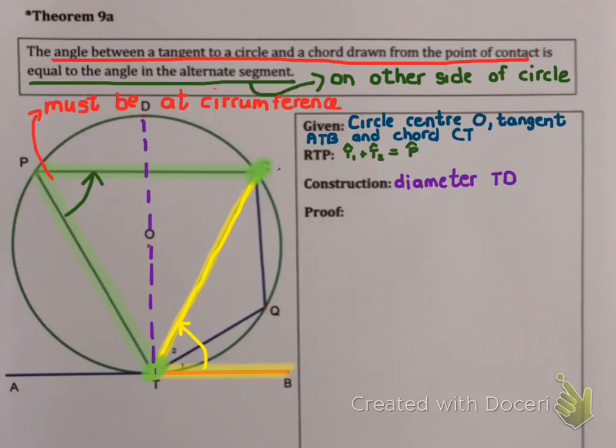Which means I'm going to label a third angle at point T. And I'm going to call it T3. I'm then going to join P to D. And I'm going to label angles P1 and P2. So I'm going to write under constructions, join PD to form P1 and P2.